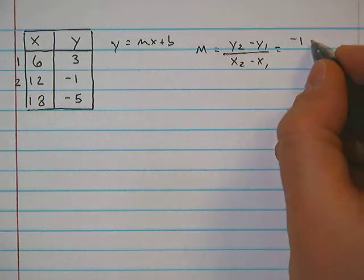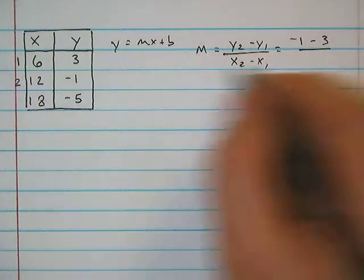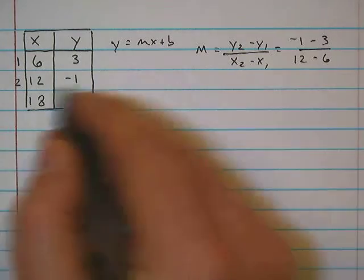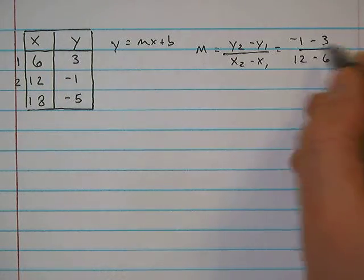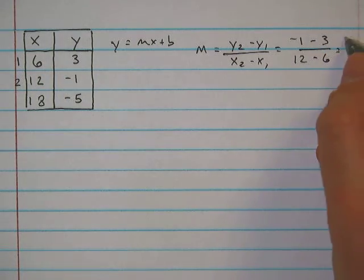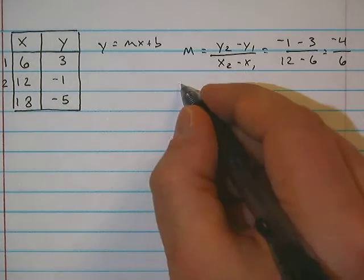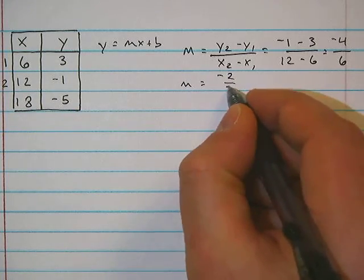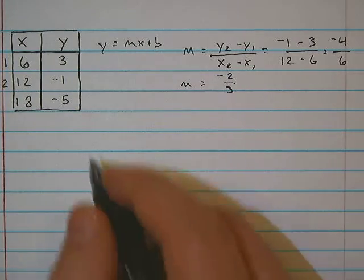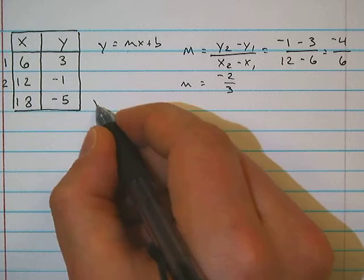My y2 value is negative 1 minus my y1, which is 3, and 12 minus 6, so x2, x1. That's equal to negative 1 minus 3 is negative 4 over 12 minus 6, which is 6. And that reduces down to m is equal to negative 2 thirds.